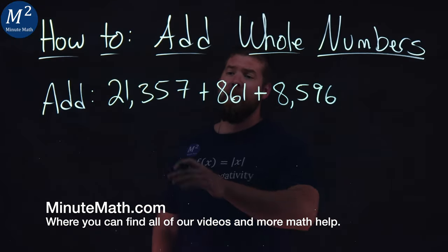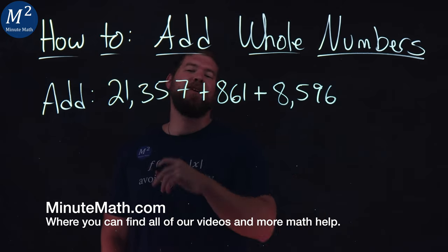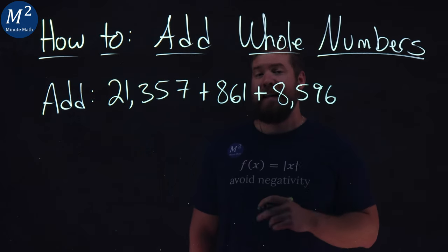We're given this problem here that has three whole numbers that we want to add. Not two, 21,357 plus 861 plus 8,596.